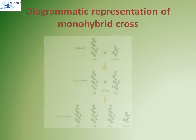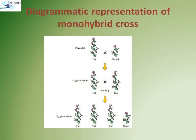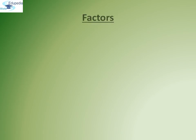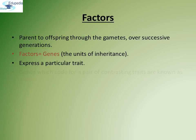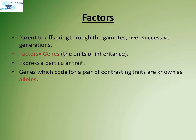In the diagrammatic representation of the monohybrid cross, a tall plant is crossed with a dwarf plant producing the F1 generation. Both tall plants in F1 were self-pollinated, producing the F2 generation with tall and dwarf plants in a ratio of 3:1. Based on these observations, Mendel proposed that something was stably passed from parents to offspring through gametes over successive generations — these factors are otherwise called genes. Genes are the units of inheritance containing information required to express particular traits. Genes which code for a pair of contrasting traits are known as alleles.